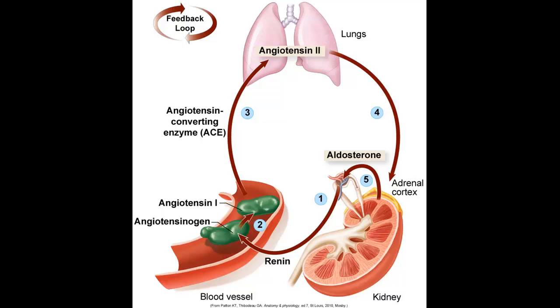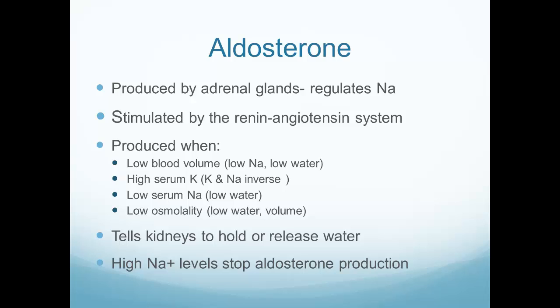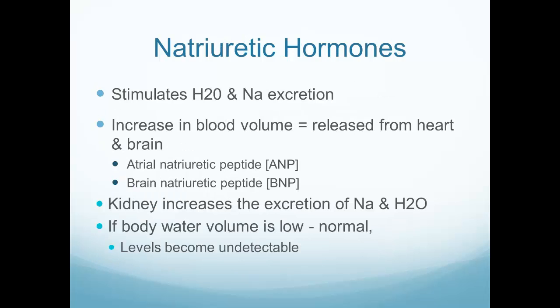The vasculature in the kidney monitors blood pressure and when it's too low, it produces renin. Renin is converted to angiotensin I, then travels to the lung where it's converted to angiotensin II, which affects blood pressure. Aldosterone is produced by the adrenal glands to help regulate sodium; it's also stimulated by the renin-angiotensin system and tells the kidneys to retain fluid. So in dehydrated situations, aldosterone is produced to tell the body to hang on to fluid.